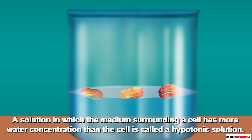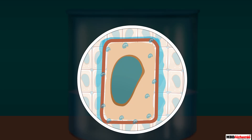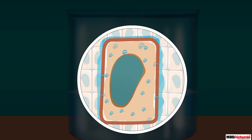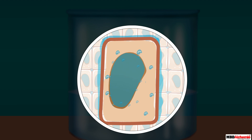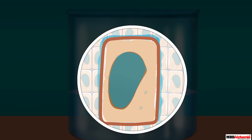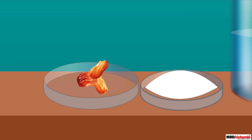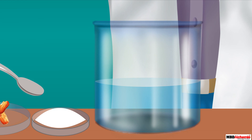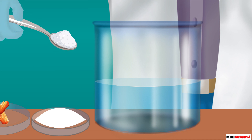The increase in size of the cells results in the overall swelling of the raisins. Any solution in which the medium surrounding a cell has more water concentration than the cell is called a hypotonic solution. In such a solution, water moves into the cell by osmosis. Now take the same swollen raisins and put them in a concentrated salt solution in a container.